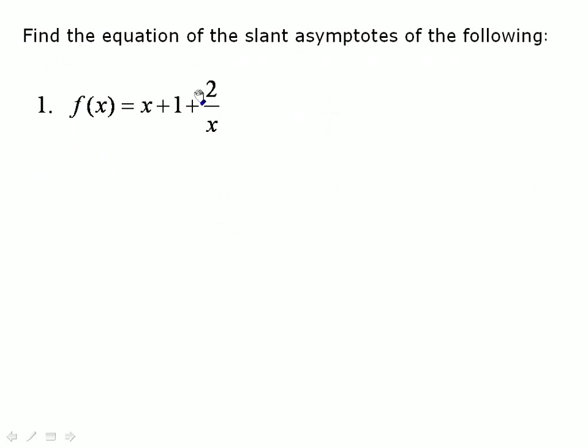The equation of the slant asymptotes are the following. First off, this one. This one doesn't require any work. We take the linear part of the function. So what you should get is a linear and then you should get a rational part. And the linear part is the slant asymptote. So therefore, the equation is going to be y equals x plus 1 is the slant asymptote.